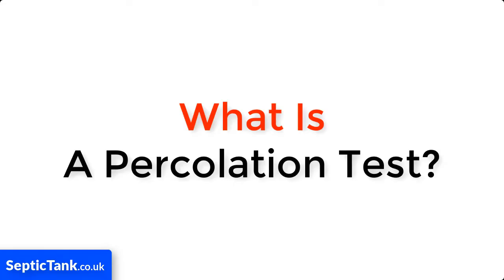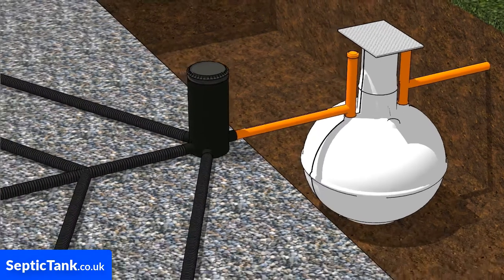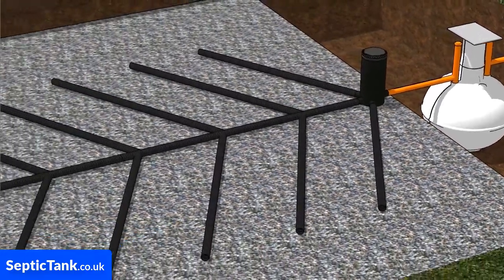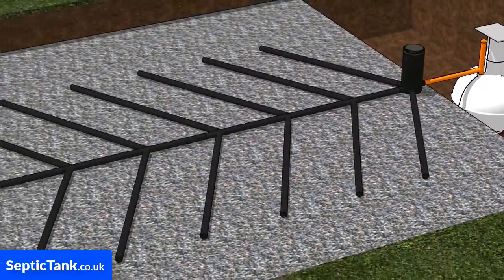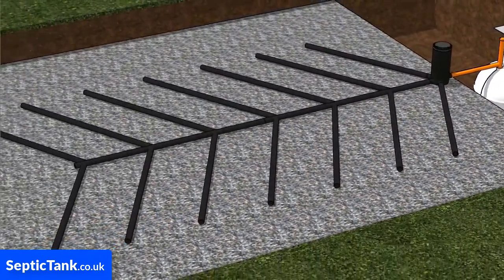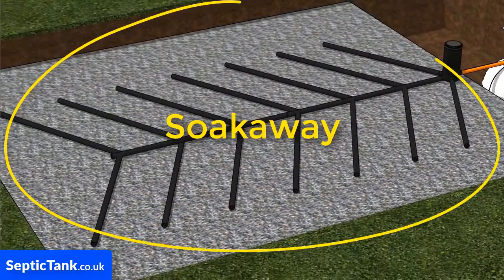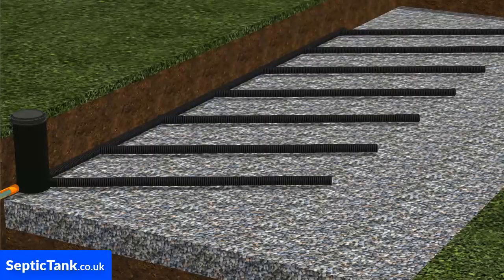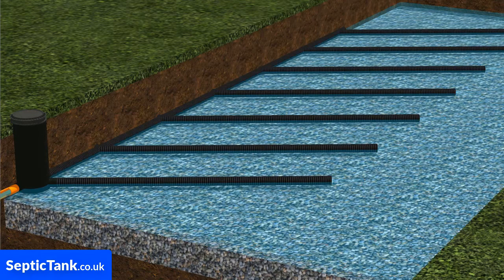What is a percolation test? A percolation test determines if the ground is suitable for a soak away or not, and that the waste water that enters the soak away from the septic tank can drain away naturally into the soil.